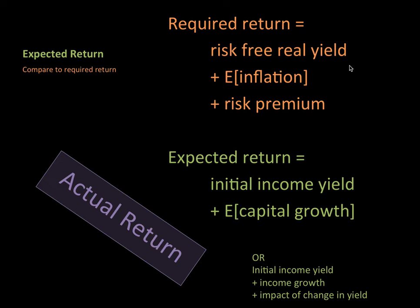When it comes to investors making their decision on what they want to invest in, they're going to be looking at two things. They'll ask: what is my required return as an investor — what do I need to get back by putting my money out there? And then they're going to look at the various assets and say, what is the expected return of these assets? If expected return is greater than required return, that's something they're interested in. If expected return is less than required return, they're not going to be interested in it.